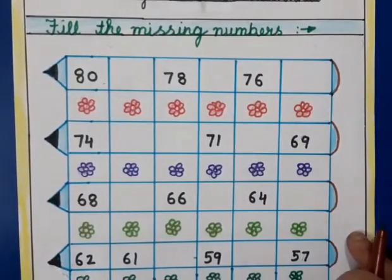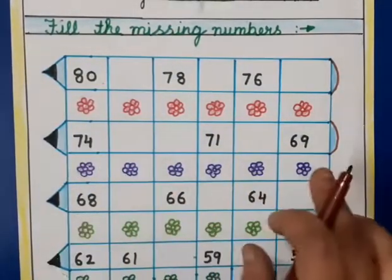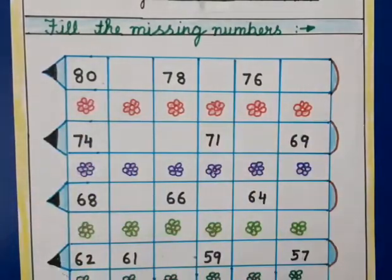As you can see my dear kids, this is backward counting and you have to fill the missing numbers in these blank spaces. So we will start like this.